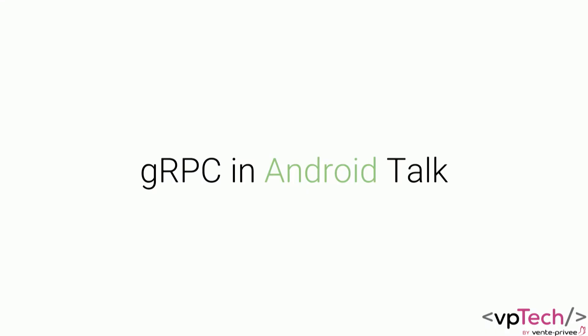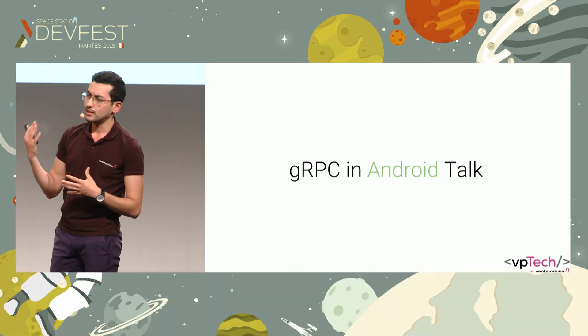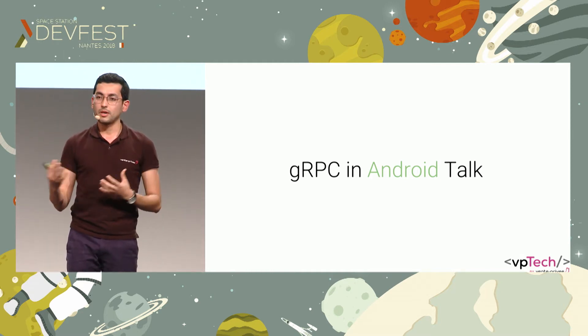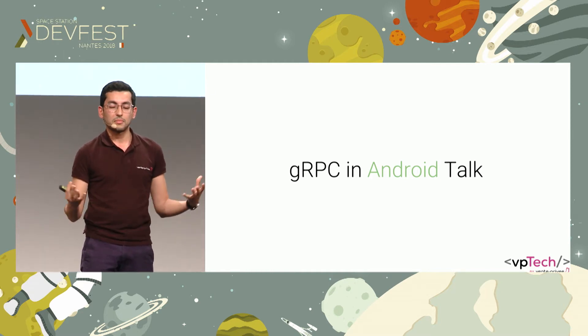To put it simply, distributed computing is the art of making code written in various languages and technologies, hosted in several locations, communicate between each other in a seamless way. So from an Android perspective, from a client or mobile perspective, you can think of it as a different way of communicating between an app and a server — and that's not something new.